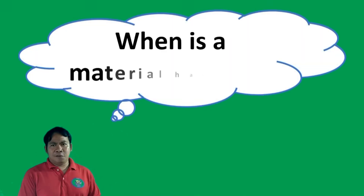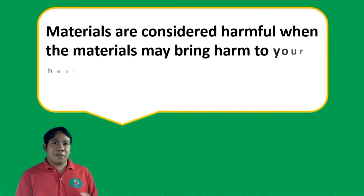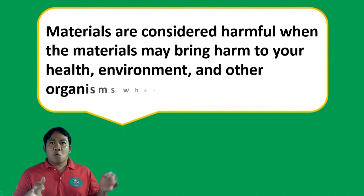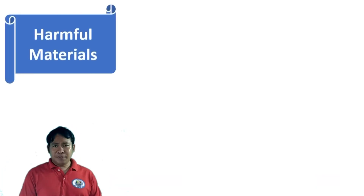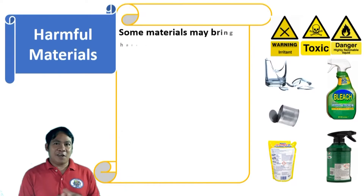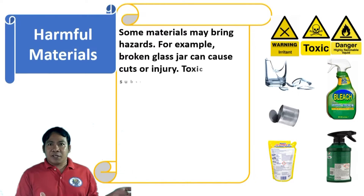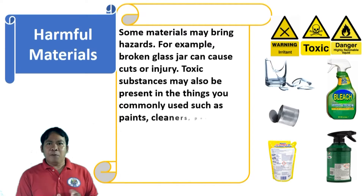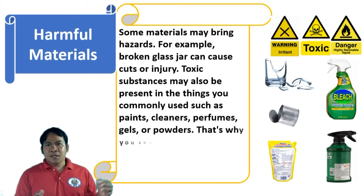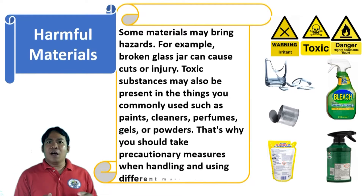When is a material harmful? Materials are considered harmful when they may bring harm to your health, environment, and other organisms when not used properly. Some harmful materials may cause physical injury — for example, broken glass can cause cuts or injury. Hazardous substances may also be present in things you commonly use, such as paints, heaters, perfumes, gels, or powders. That is why you should take precautionary measures when handling and using different materials.